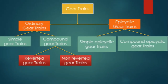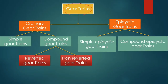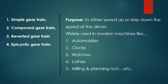The gear train is majorly divided into two categories: ordinary gear train and epicyclic gear train. The ordinary gear train is subdivided into simple gear train and compound gear train. The epicyclic gear train is subdivided into simple epicyclic and compound epicyclic gear train. The compound gear train is further subdivided into reverted and non-reverted gear train.